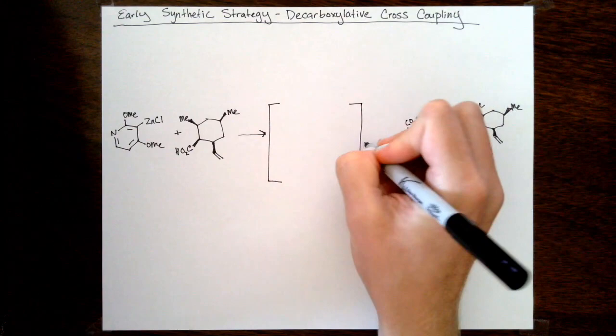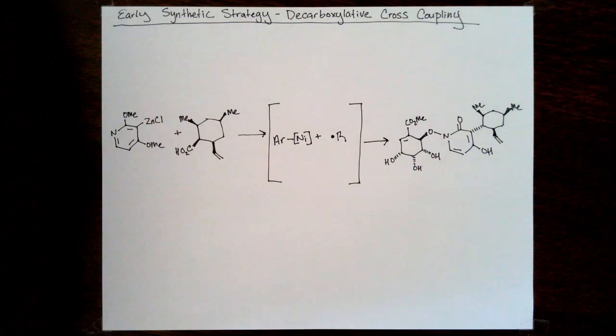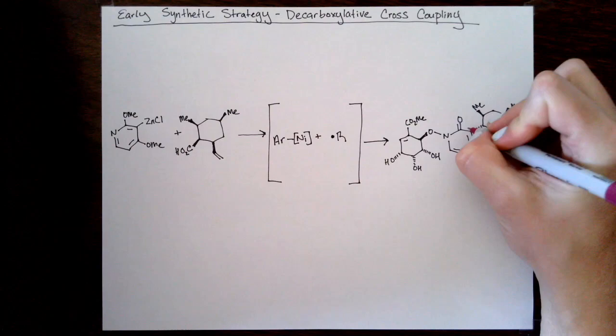This is an extremely hindered system that they would be forming that bond. It's both ortho substituted and alpha substituted to form that bond. If they were able to do the cross-coupling, this would be one of the most hindered systems able to demonstrate that chemistry.